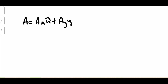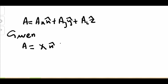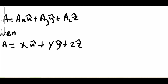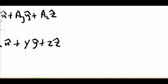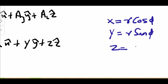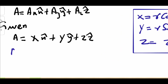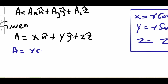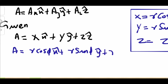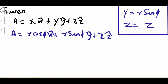Now let's do an example problem. The generic form is A = Ax x̂ + Ay ŷ + Az ẑ. The given vector is A = x x̂ + y ŷ + z ẑ, and we need to transform it into cylindrical coordinates. We know: x = R cosφ, y = R sinφ, z = z. So A becomes R cosφ x̂ + R sinφ ŷ + z ẑ.